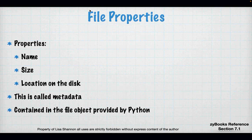A file has properties: it has a name, a size, and a location on disk. You can think of the location on disk as just an address — just like a home address, it's a unique address for that file. The name, the size, the location — all of that is called metadata, because it's the data about the file, not the file itself. It's contained in a file object provided to us by Python.